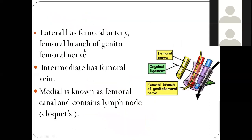So the femoral sheath includes the femoral vessels, and the femoral nerve lies outside. Laterally we have femoral artery with the femoral branch of genitofemoral nerve, in the middle the femoral vein, and the medial-most is the femoral canal, which contains a lymph node — one of the deep inguinal lymph nodes given a special name: the lymph node of Cloquet or lymph node of Rosenmüller.